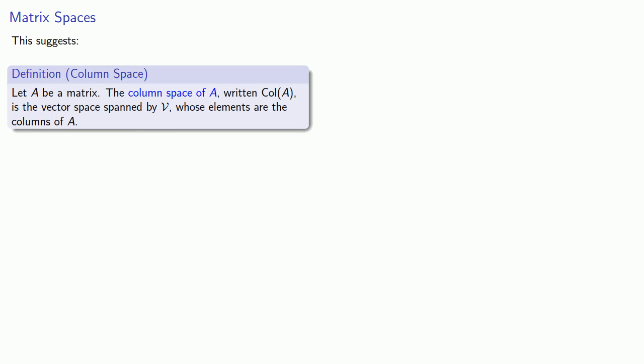Let A be any matrix. The column space of A, written column A, is the vector space spanned by V whose elements are the columns of A.